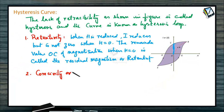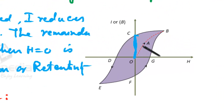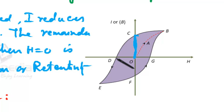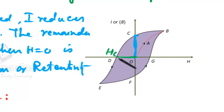Second, coercivity or coercive force. When magnetic field H is reversed, the magnetization decreases, and for a particular value of H denoted by HC, it becomes zero. HC, that is OD, is the value where I is equal to zero, and this value of H is called coercivity.